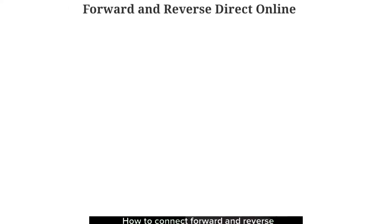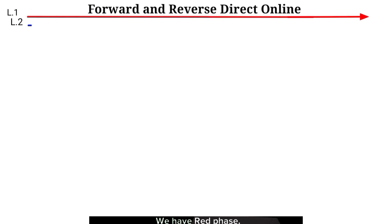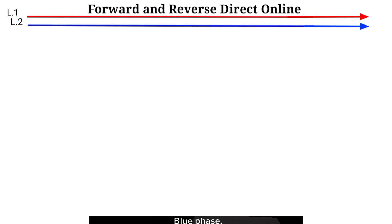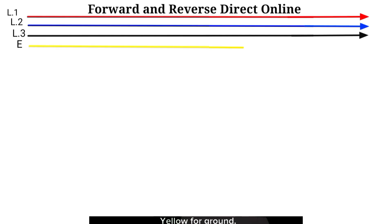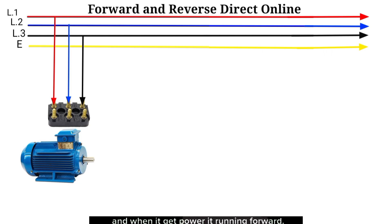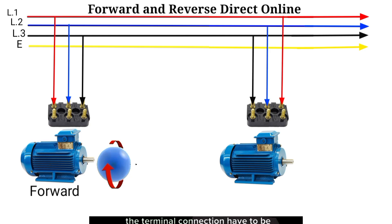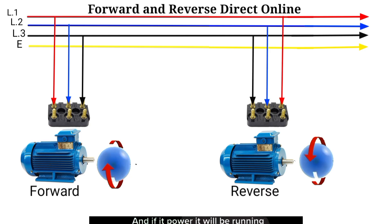How to connect forward and reverse direct online starter. We have red phase, blue phase, black phase, and yellow for ground. To quickly understand this: if we have a motor connection and when it gets power it runs forward. To run it in reverse, the terminal connections have to be swapped, and when powered it will run in reverse.